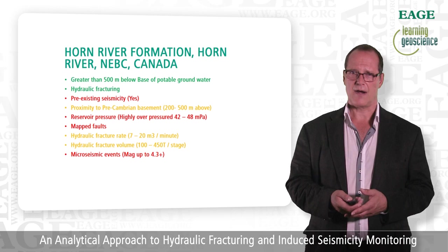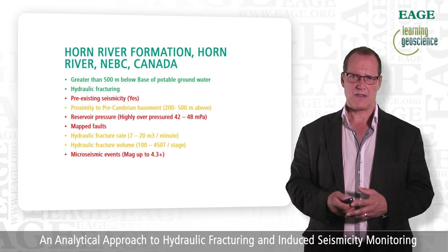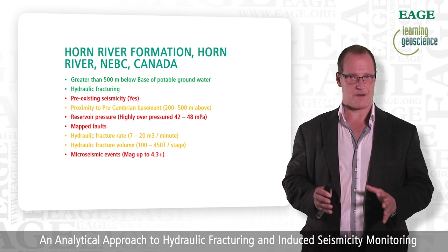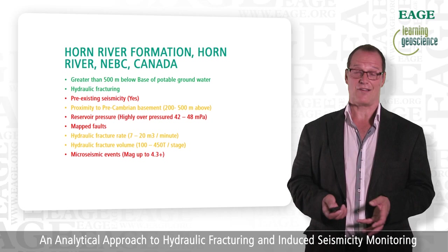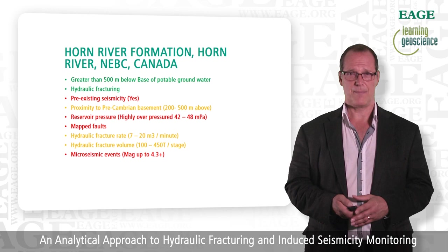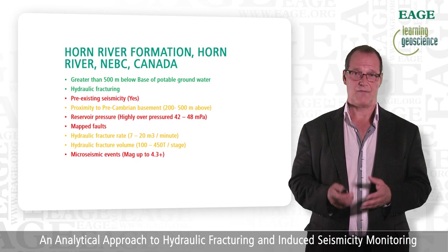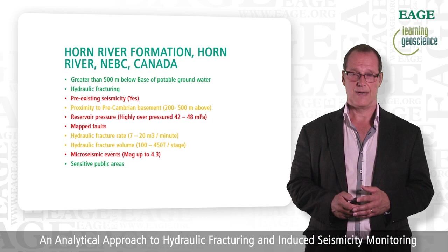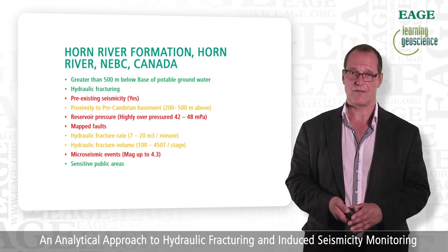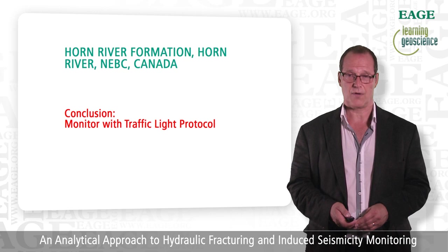So how are they going to frack this? They fracture these reservoirs at 7 to 20 cubic meters per minute — pretty high. Volumes are also high: 100 to 450 tonnes per stage — a lot of fluid. Have they recorded micro seismic? Yes, they have events above MAG 4.3. They have monitored, and the government says if you work in this area you do need to monitor. Is it a sensitive public area? No, it's in the boonies of Northeast BC. However, with all those issues together, you should monitor and have a traffic light protocol system in place.